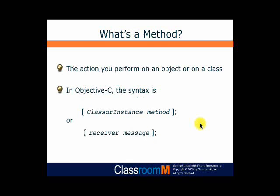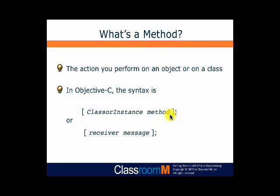So what we're going to do is take this idea of a car and the actions we perform on it and apply some syntax and terminology to mold it into an Objective-C expression. A method is really the action you perform on an object or on a class. We talked about actions we perform with our car — we might wash it, service it, fill it with gas. Objective-C uses left and right bracket notation, and in between the two we list first a class or an instance, then the action we want to perform on that class or object.